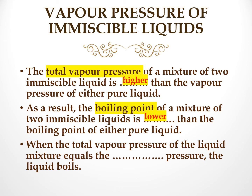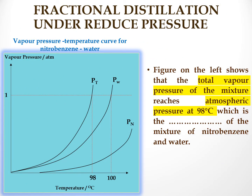When the total vapour pressure of a mixture equals the external atmospheric pressure, the liquid boils. The figure on the left shows that the total vapour pressure of the mixture reaches atmospheric pressure at 98 degrees Celsius, which is the boiling point of the mixture of nitrobenzene, benzene, and water.